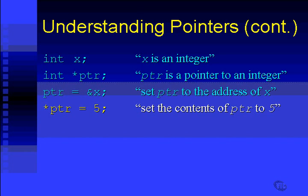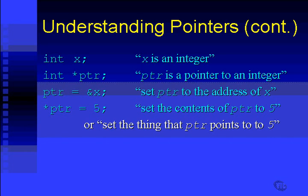So you can read that in English as set the contents of ptr to 5, which is not an exactly precise way of describing what's going on, because the contents of ptr is a somewhat ambiguous statement. So you usually say, set the thing that ptr points to, to 5.